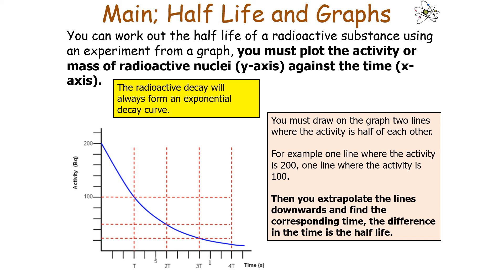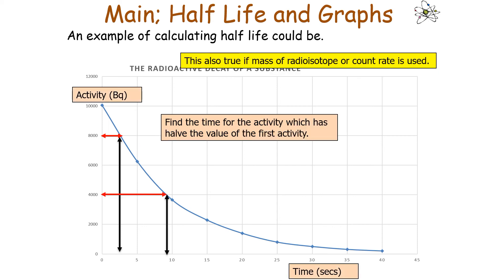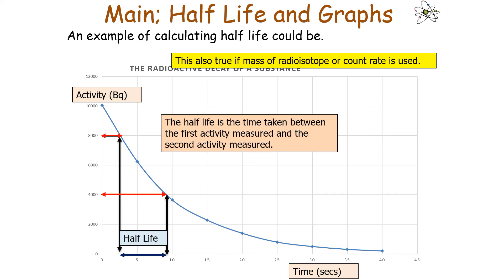For example, one line where the activity is 200 and another where it is 100. Extrapolate the lines downwards to find the corresponding times, and the difference between the two times is the half-life. This method works whether you are using activity, mass of radioisotope, or count rate: find the time for one activity value, find the time for half that value, and the half-life is the difference.